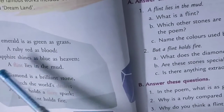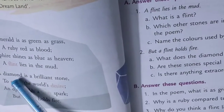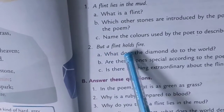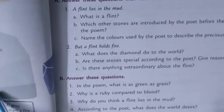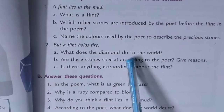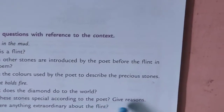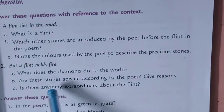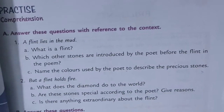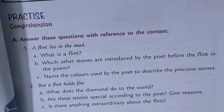Name the colors used by the poet to describe the precious stones. Emerald - green, ruby - red, sapphire - blue, diamond - brilliant stone. Now number 2: But a flint holds fire. What does a diamond do to the world? The answer is: a diamond catches the world's desire. Desire means wishes. Are these stones special according to the poet? Yes.